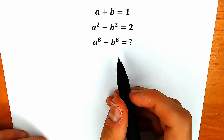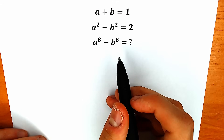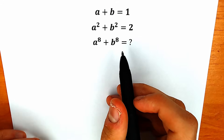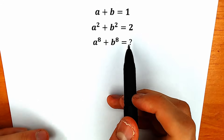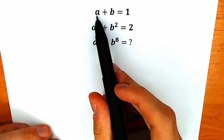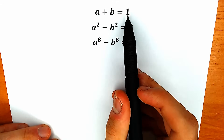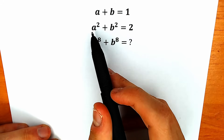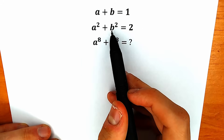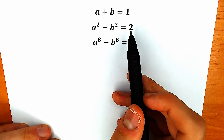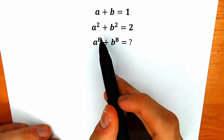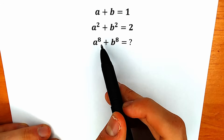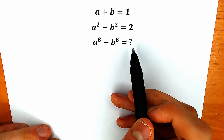Hello everyone! Welcome back to my channel. Today we have a very interesting and tricky algebra question. We know that a plus b equals 1, a squared plus b squared equals 2, and we need to find the sum a to the 8th plus b to the 8th.